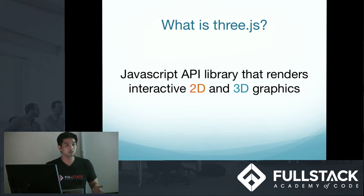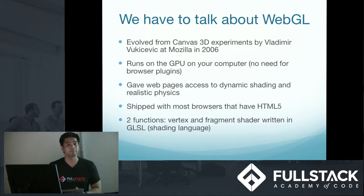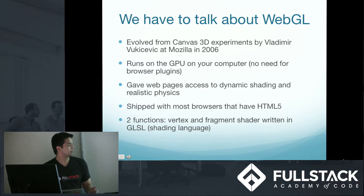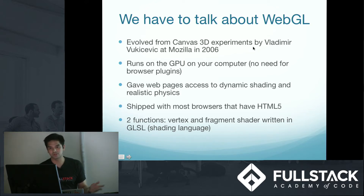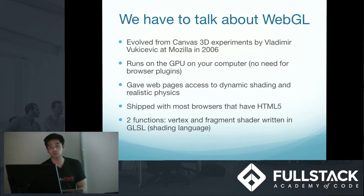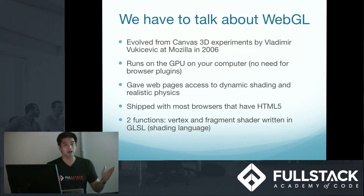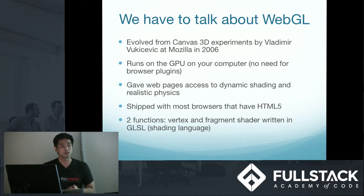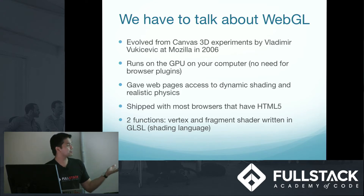But before we actually talk about Three.js, we have to talk about WebGL. WebGL is the 3D API of the web — just the standard 3D graphics API for the web. It was developed by Vladimir Vukicevic at Mozilla in 2006, and I think it's now maintained by the Khronos Group. The key thing to take away is that it runs on the GPU on your computer. This was a game-changer when it was released, because back then developers had to rely on plugins or native applications to give users a 3D experience, and on top of that they had to ask users to download custom software. As developers, we all know we don't want users to do anything — we just want them to browse and appreciate the websites we've built.